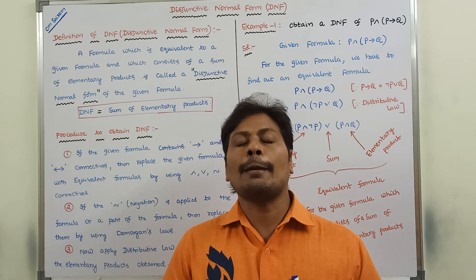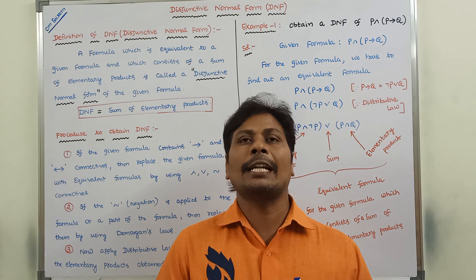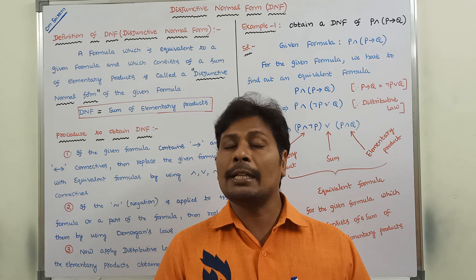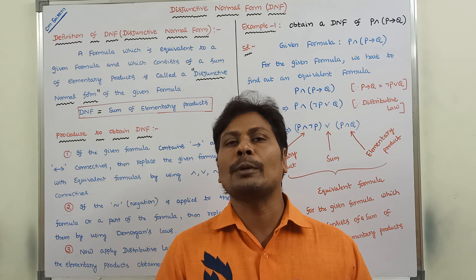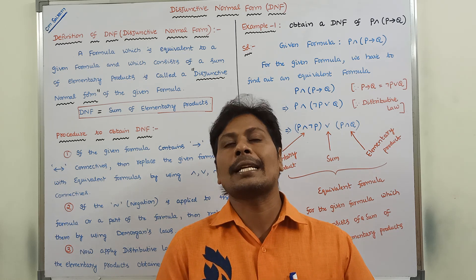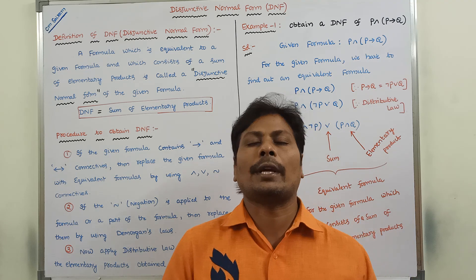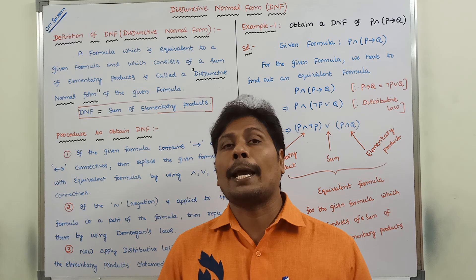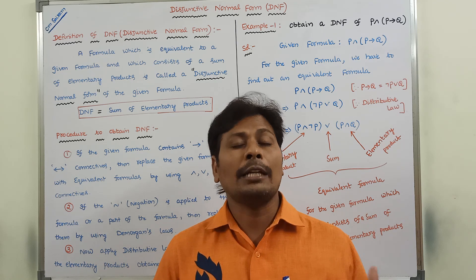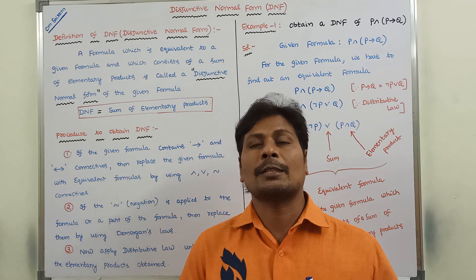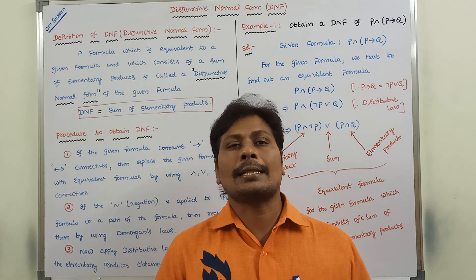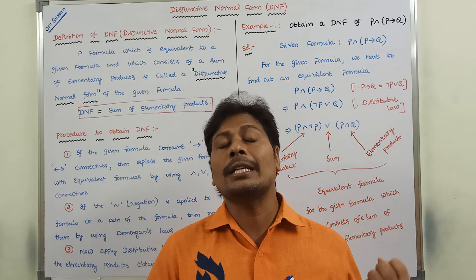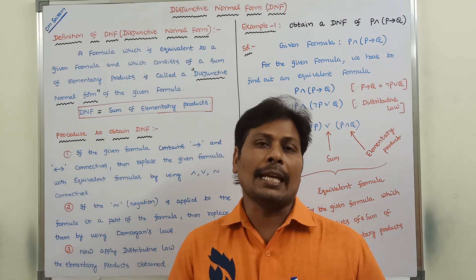Actually, there are four types of normal forms. One is disjunctive normal form. Second one is conjunctive normal form. Third one is principal disjunctive normal form. Fourth one is principal conjunctive normal form. Why we are using normal forms and what are the types of normal forms — that we have discussed in the previous video. Once you understand the previous video, then it is very easy to understand the DNF.